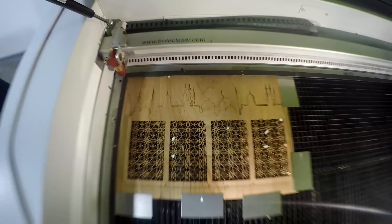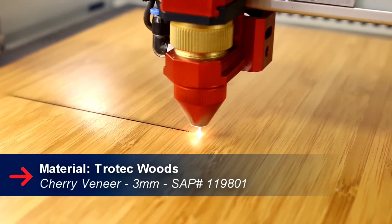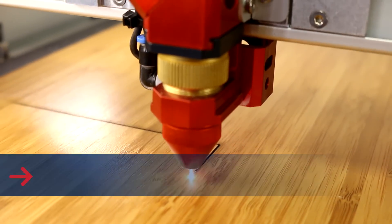Now let's go to the base. For our base we used our 3mm thick cherry wood veneer and cut it with our Speedy 400.